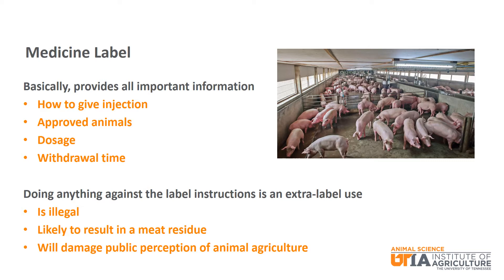The trade name is how you know most medications. For example, Banamine is the trade name for flunixin. Chances are you have heard of Banamine but never heard of flunixin. The route of administration is how the medication should be given. For most injectable medications, this will either be subcutaneous or intramuscular injection.